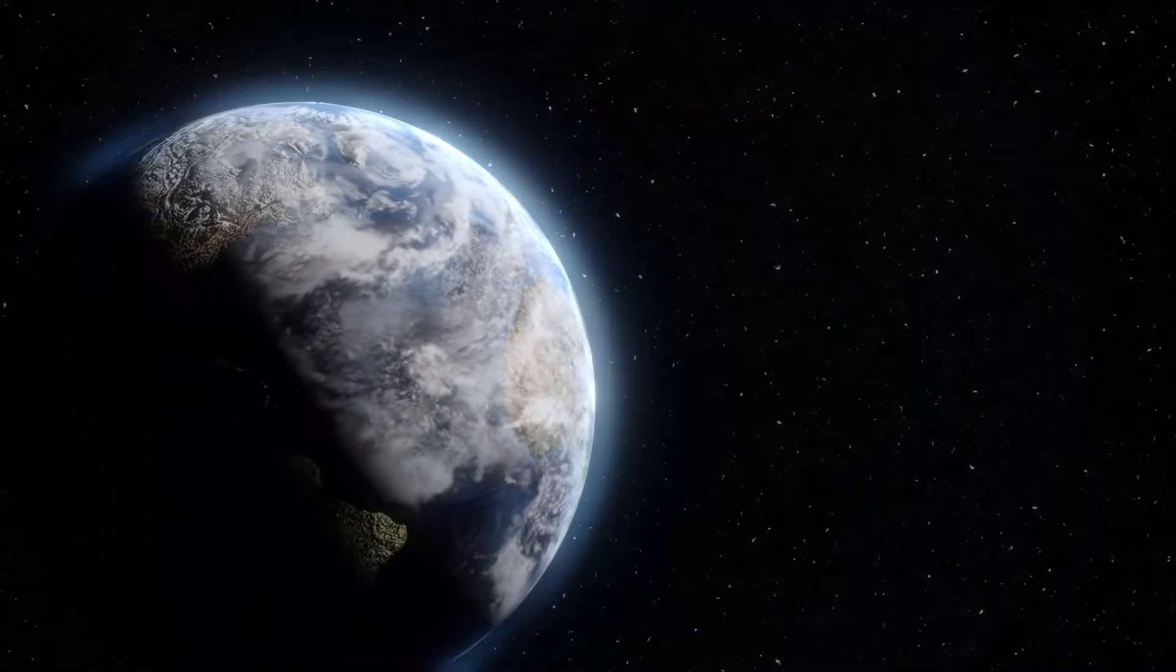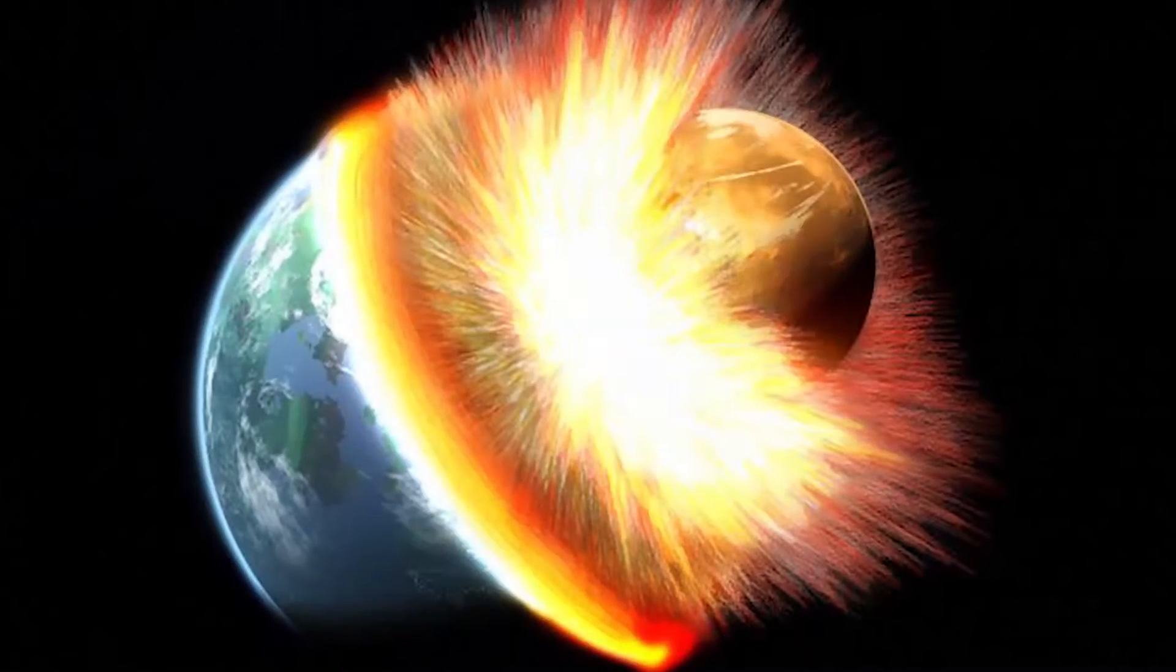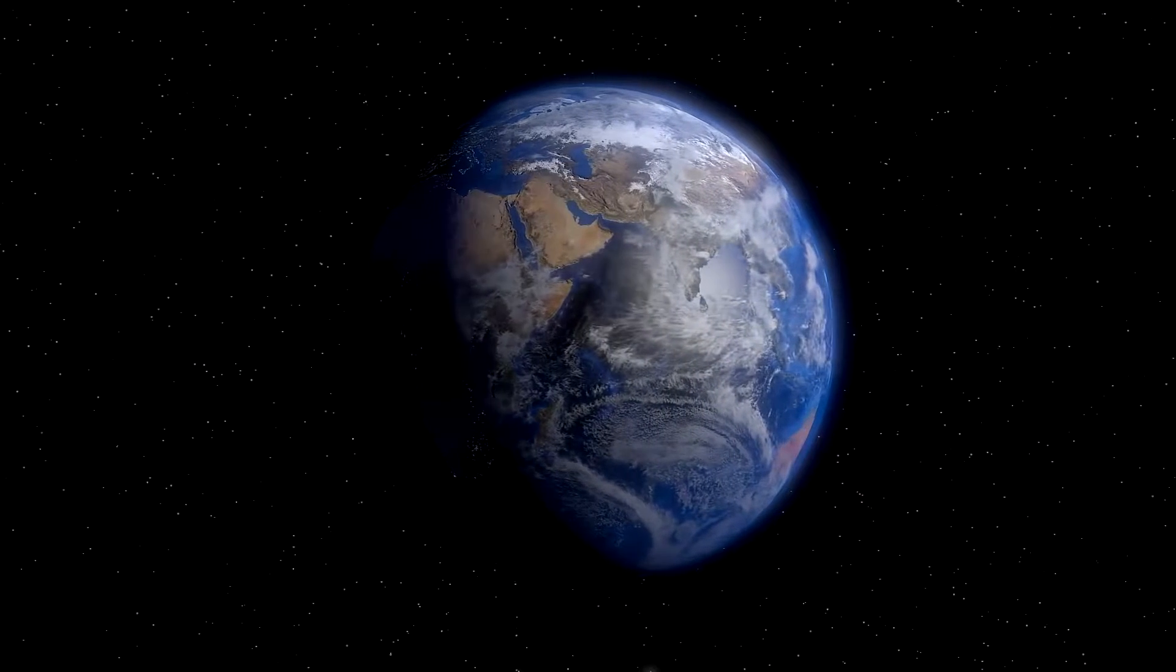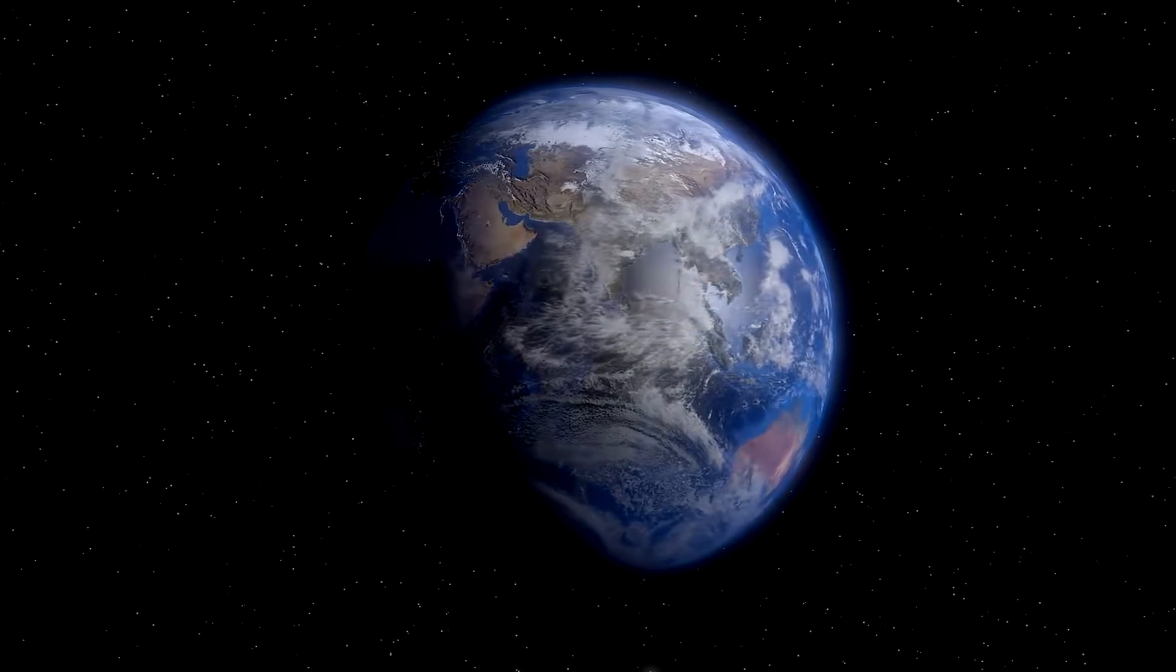The only thing that could stop the Earth's spin would be if another planet crashed into it. Even if this happened, it would most likely change how it spins, not lock it altogether.